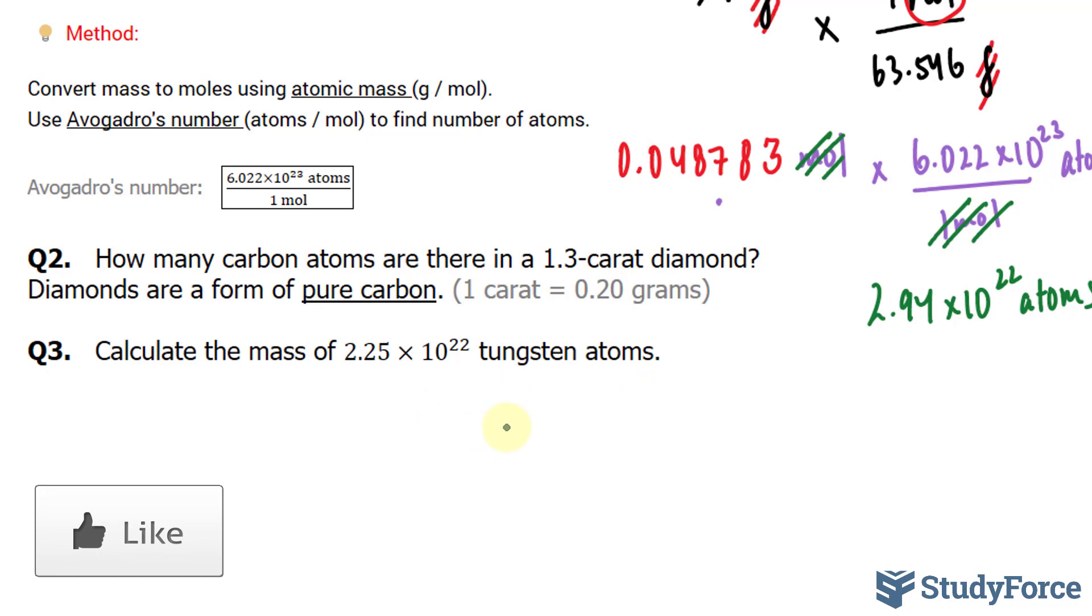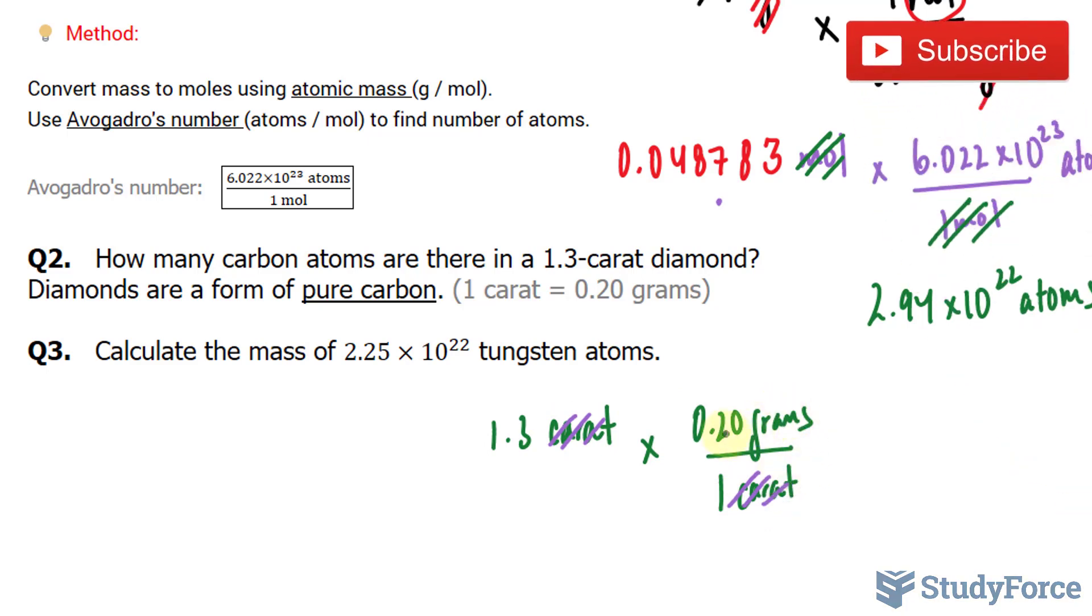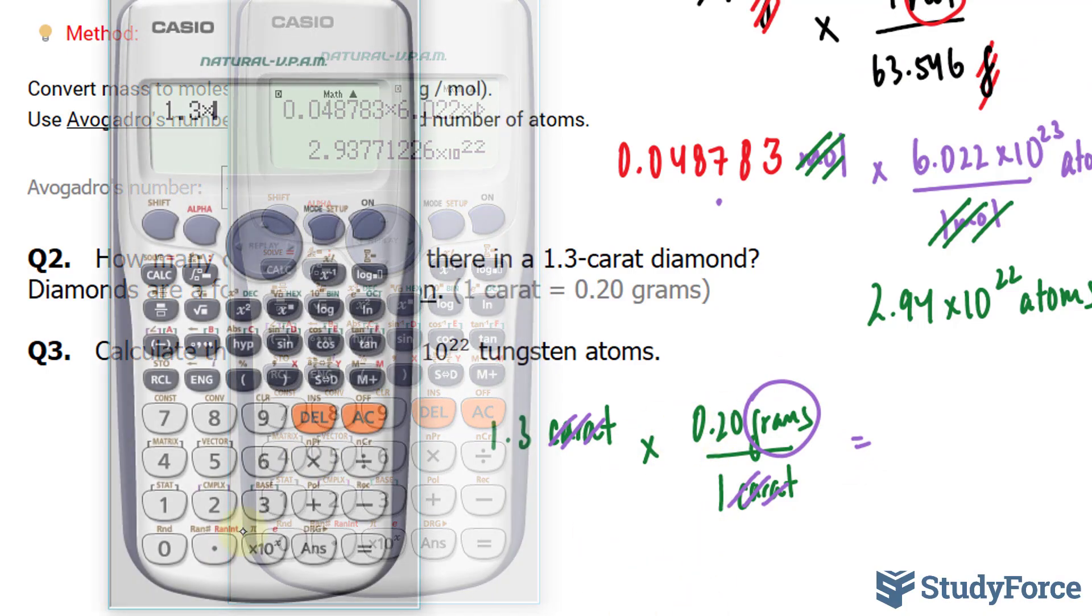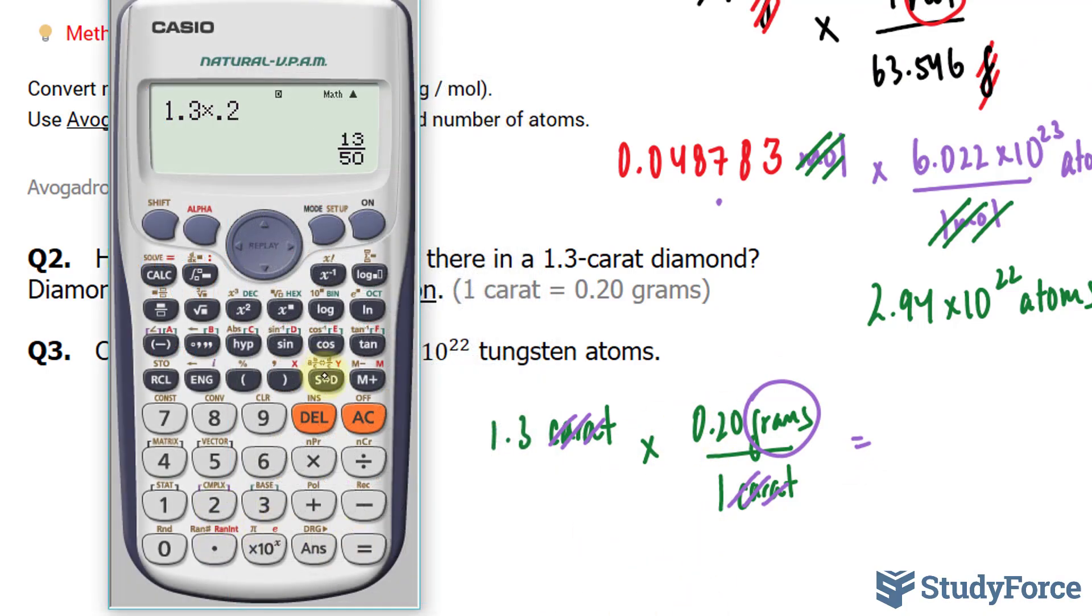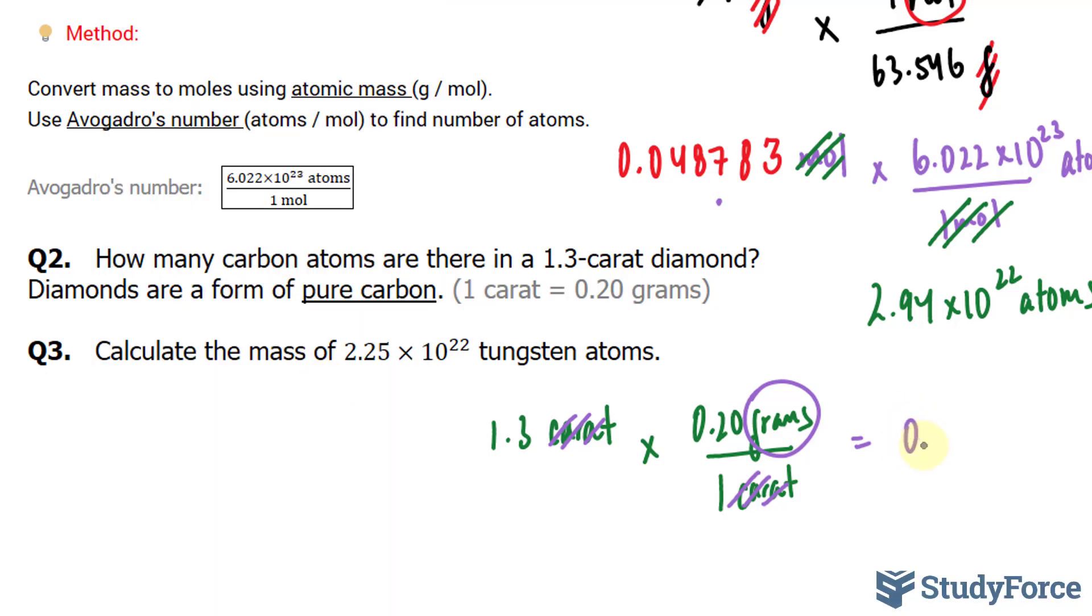Here's the conversion ratio for that. We'll take 1.3 carats and multiply it by 0.20 grams over 1 carat. By doing it this way, the carat unit will cancel out. Make sure you orient your conversion ratio so that the units cancel out. 1.3 times 0.2 gives us the following, 0.26.